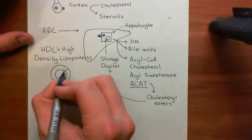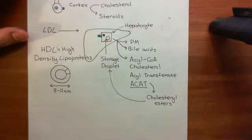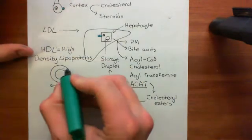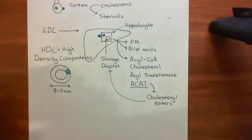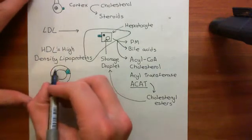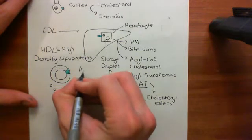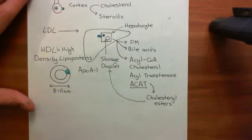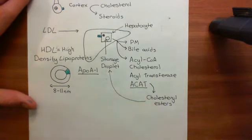They will have a phospholipid monolayer just like all the other lipoproteins. Within this phospholipid monolayer, what you will have is apolipoproteins suspended. The apolipoproteins found within the phospholipid monolayer of high-density lipoproteins are usually apolipoprotein A1 — the main apolipoprotein present within HDL.